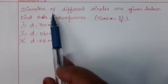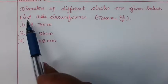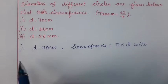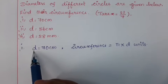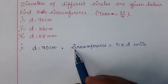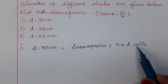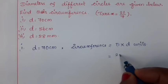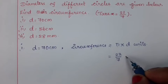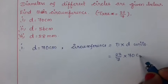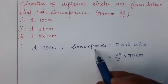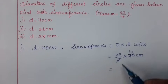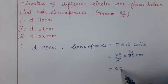Question number 2: Diameters of different circles are given below. Find their circumference, provided pi is equal to 22/7. For the first subdivision, the given diameter d is equal to 70 centimeters. We know that the formula for finding the circumference is equal to π into d units. Using pi = 22/7 and d = 70 cm, by simplifying 70 by 7 we get 10. By multiplying 22 by 10 we get 220 centimeters.